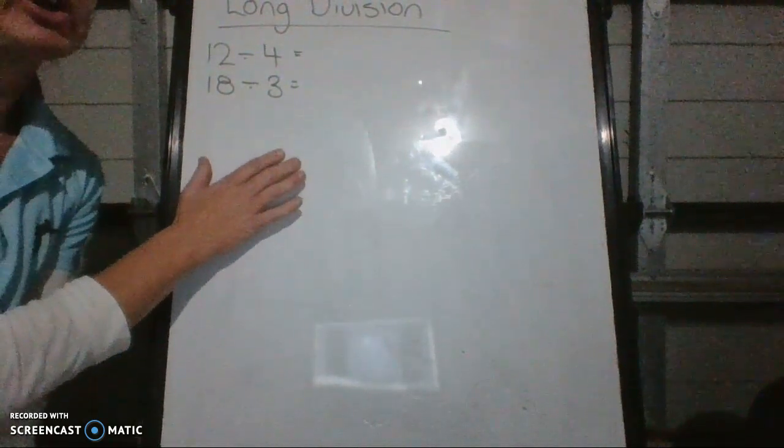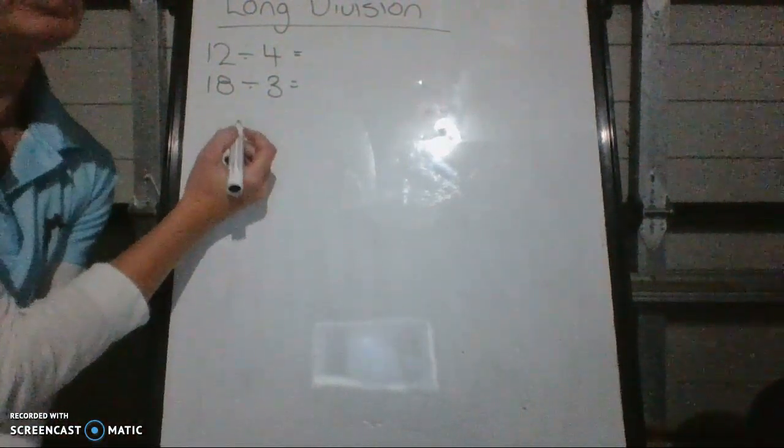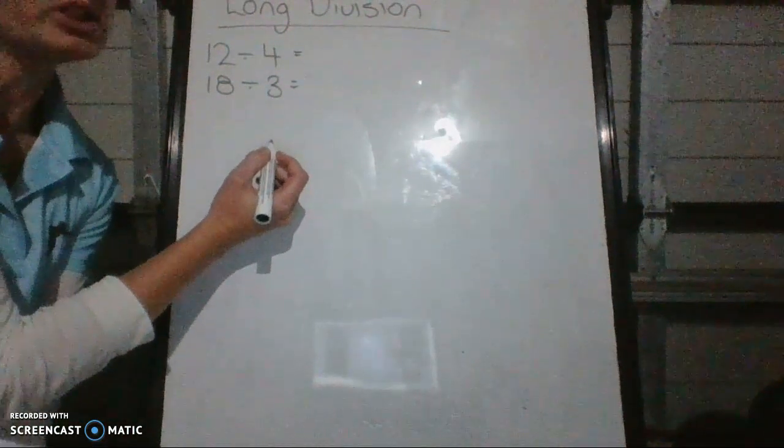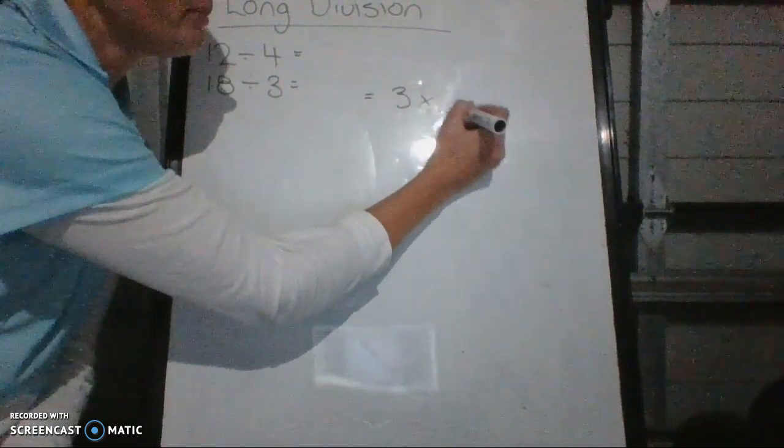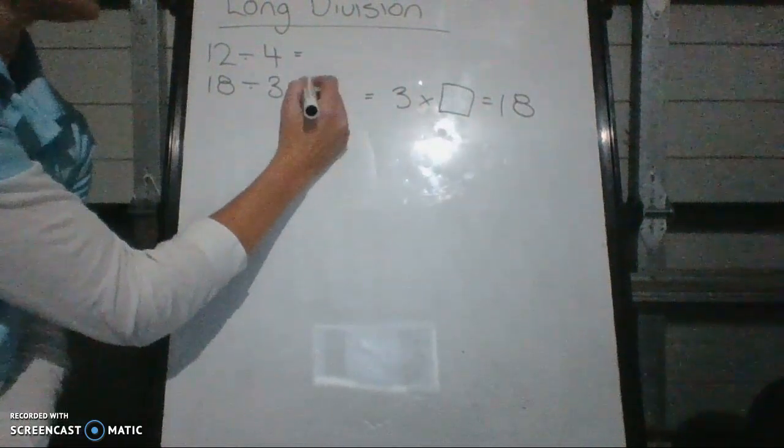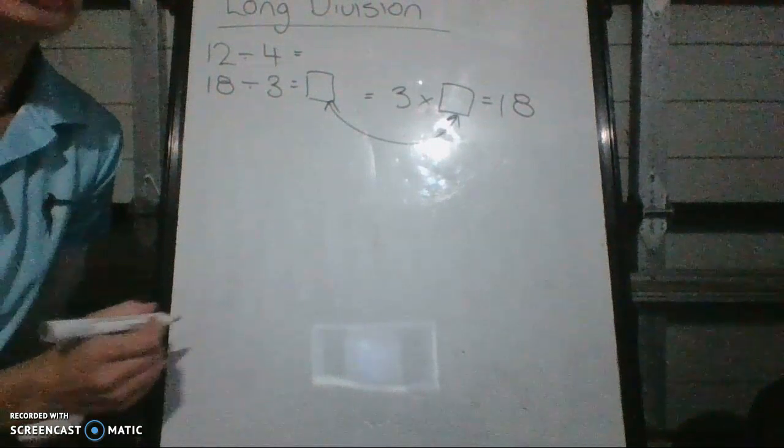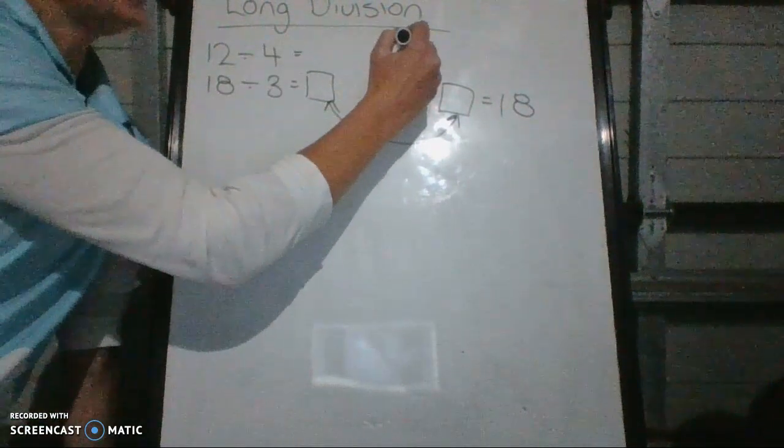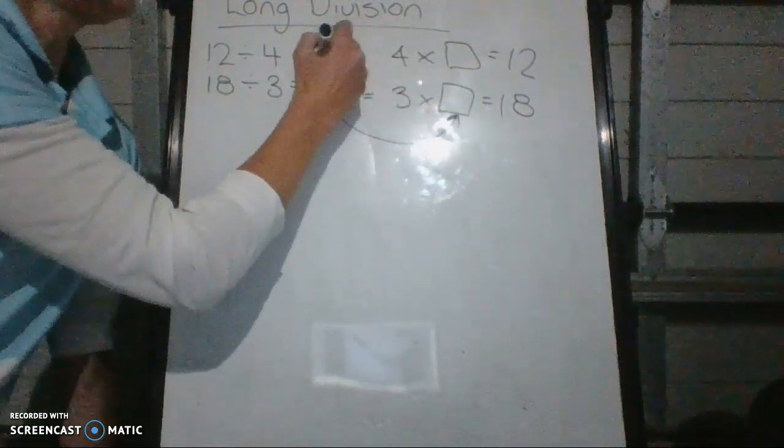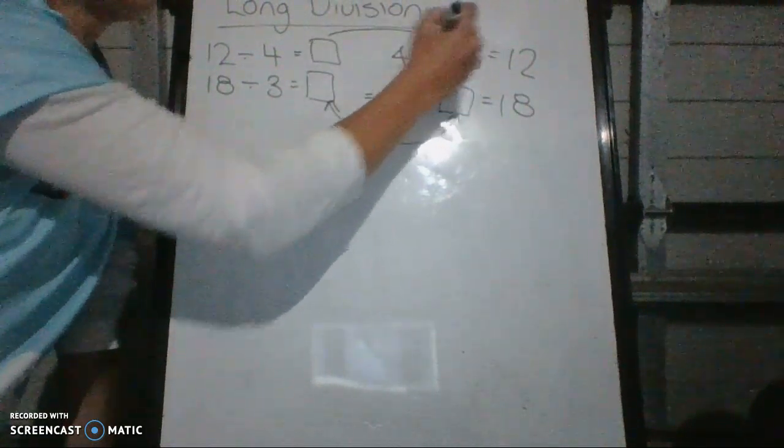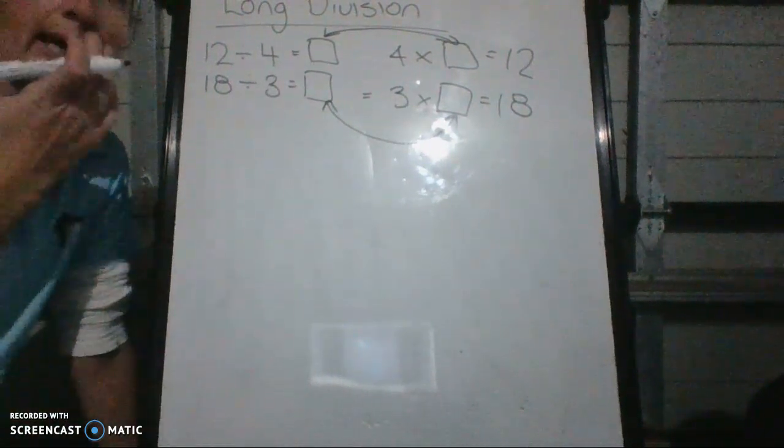Now, if you don't know them off the top of your head, think of multiplication. Division is the opposite to multiplication. So these examples suggest that 3 times something equals 18, and that something is that. And the same is 12 divided by 4. It is 4 times something which equals 12, and that box is that one.